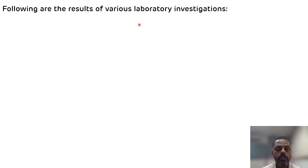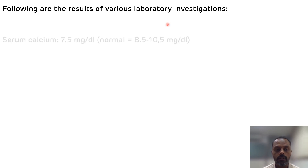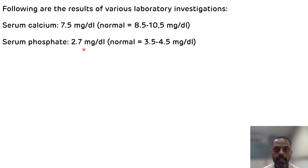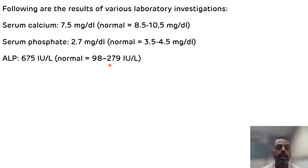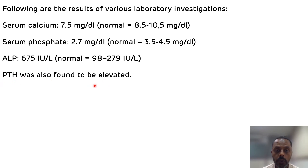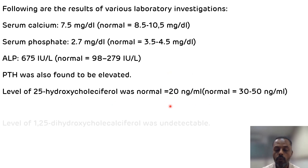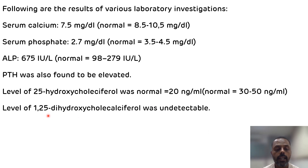Following are the results of the laboratory investigations done in this case. Serum calcium level was 7.5 mg per deciliter, which is reduced. Serum phosphate was 2.7 mg per deciliter, also reduced — normal range is 3.5 to 4.5 mg per deciliter. Alkaline phosphatase was elevated at 675 international units per liter. Parathyroid hormone level was also found to be elevated. The level of 25-hydroxycholecalciferol was within the normal range, while the level of 1,25-dihydroxycholecalciferol was undetectable.